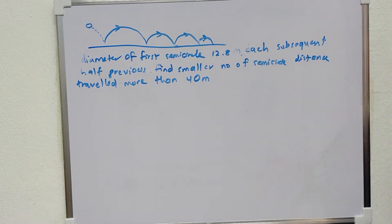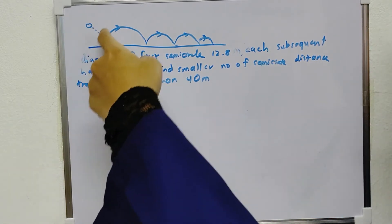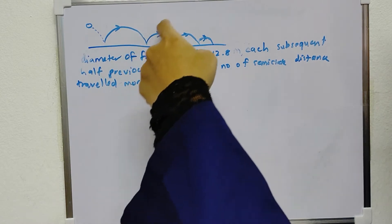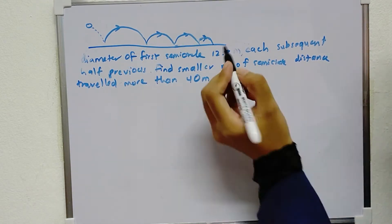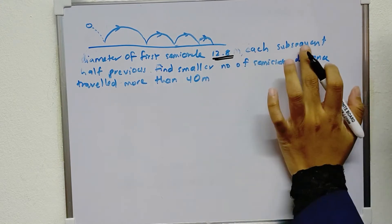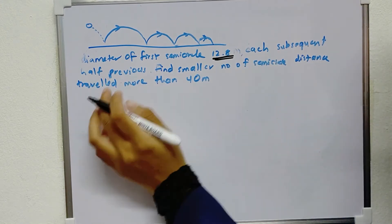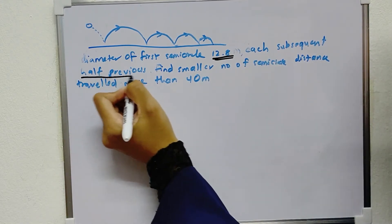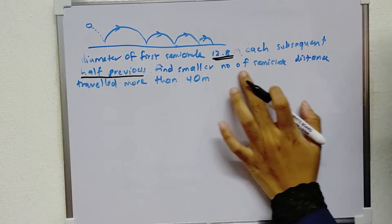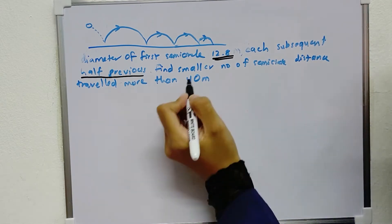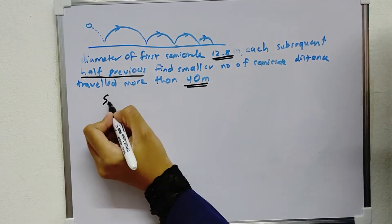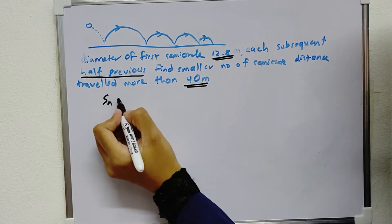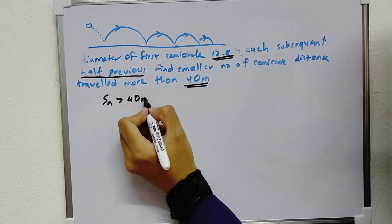Okay, Harun. So he throws a ball and this is the pass of the ball. The diameter of the first semicircle is 12.8 meters and each subsequent one is half the previous. Find the smallest number of semicircles where the distance traveled is more than 40 meters. So that means Sn is larger than 40 meters.